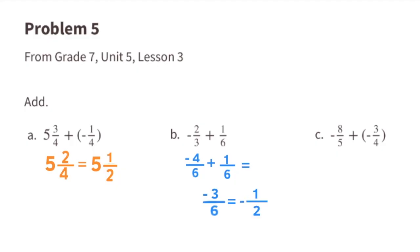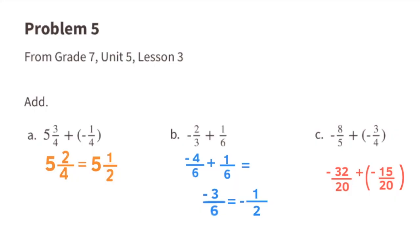Part c: negative 8/5 plus negative 3/4. We need a common denominator; I'll use 20. Negative 8/5 equals negative 32/20, and negative 3/4 equals negative 15/20. The expression becomes negative 32/20 plus negative 15/20. Negative 32 plus negative 15 equals negative 47, so the answer is negative 47/20.